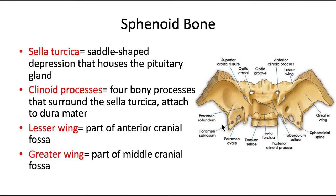The clinoid processes are four little extensions in the center of the sphenoid bone that surround the sella turcica and attach to the dura mater. The lesser wing is part of the anterior cranial fossa. The greater wing — the large part of the dragon's wing — is part of the middle cranial fossa and houses the majority of those foramina.